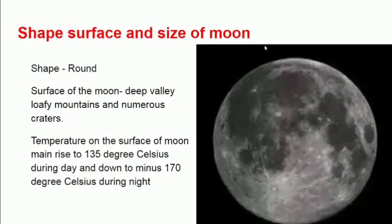The shape of the moon is round. The surface of the moon has deep valleys, loffy mountains, and numerous craters. Most importantly, the surface temperature of the moon rises to 135 degrees Celsius during daytime and drops to minus 170 degrees Celsius during nighttime.